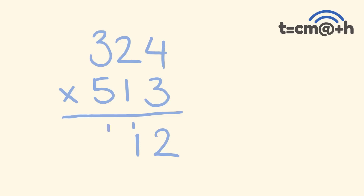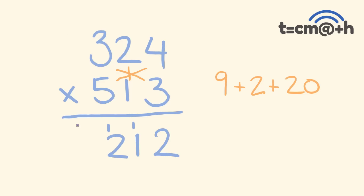The next ones we multiply are 3 by 3, 2 times 1, and 4 times 5. 3 times 3 is 9, 2 times 1 is 2, 4 times 5 is 20. We add these all together: 9 plus 2 is 11, plus 20 is 31, plus that carried 1 is 32. So we put the 2 down here and carry the 3.